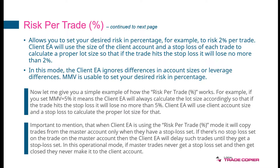Some deviation is possible, but it will be roughly 2%. In this mode, Client TA ignores differences in account sizes or leverage differences. For the MMV parameter, you use it to set your desired risk in percentage — so in this case, you would set 2 in MMV.